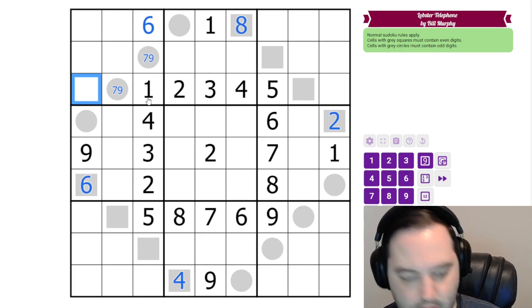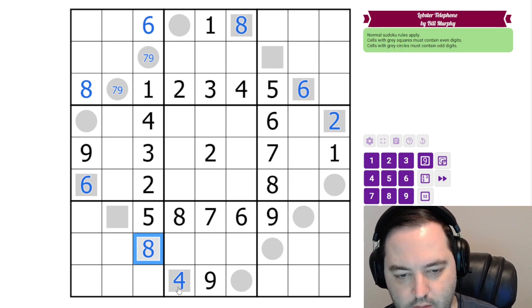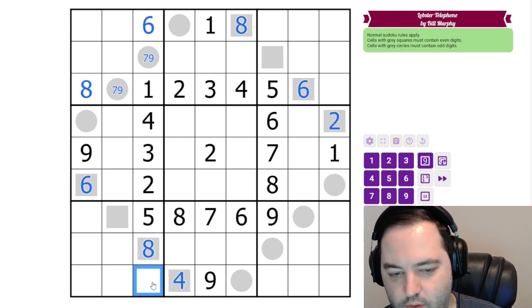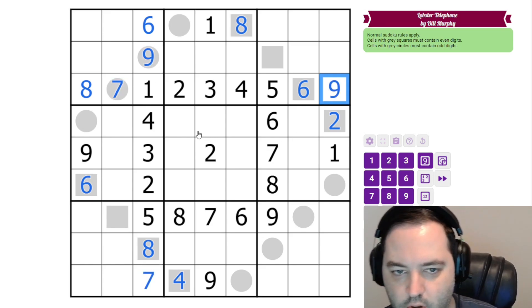And then we have a six here, so this must be eight. And now what even digit can we put here? It's not eight or two or four, so it's six. And this one must be eight. And now this cell is seven or nine. We have a nine here. So this is seven, nine, seven, nine. That resolves row three and column three.